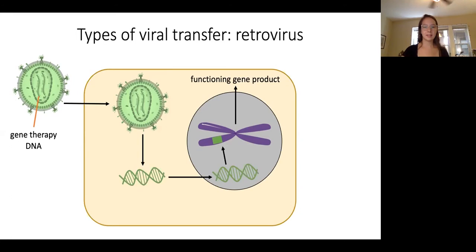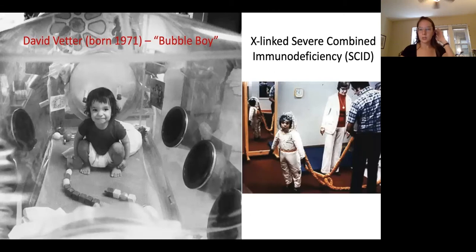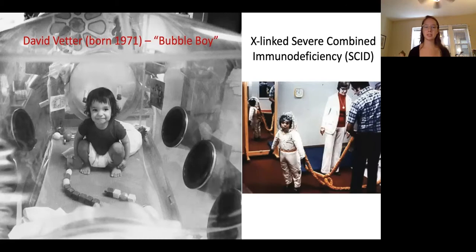Our first case is X-linked SCID — severe combined immunodeficiency. This is a collective term for disorders where individuals do not develop their adaptive immune system. In other words, they don't have the T cells, B cells, or lymphocytes needed to fight off infection. The very classic example is David Vetter, nicknamed 'the bubble boy' in popular culture, born around 1971 with X-linked SCID.